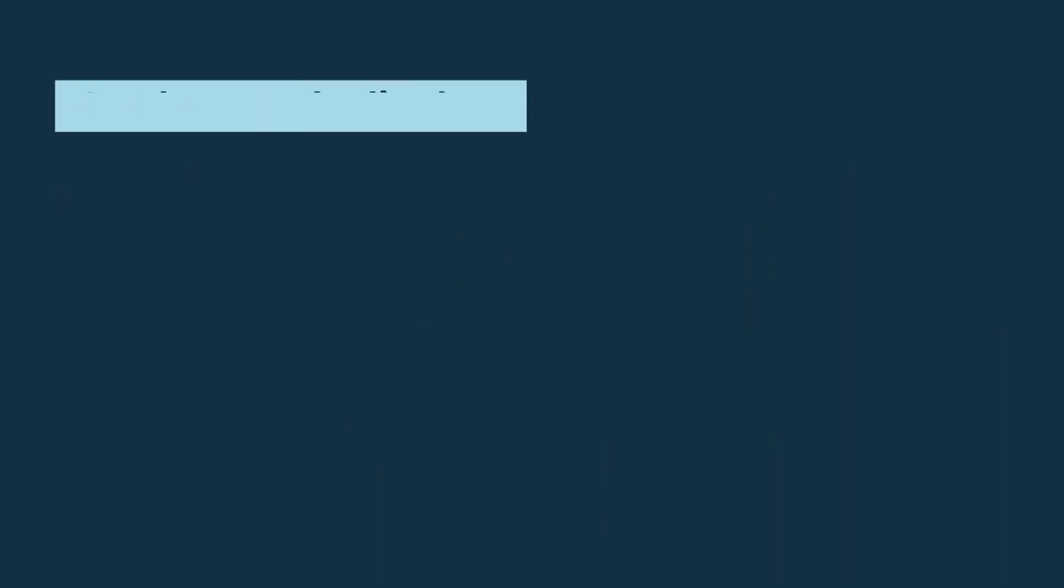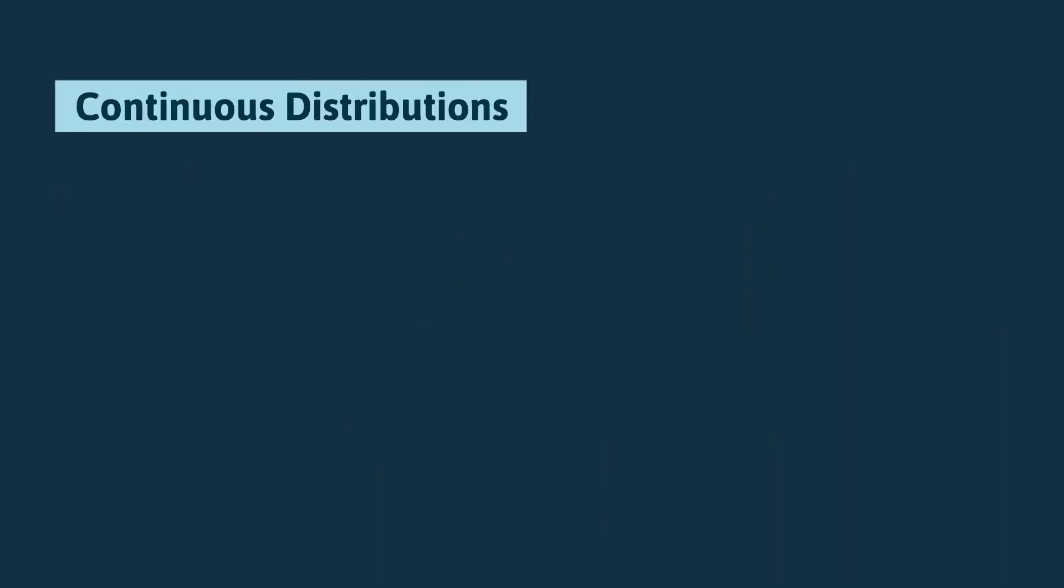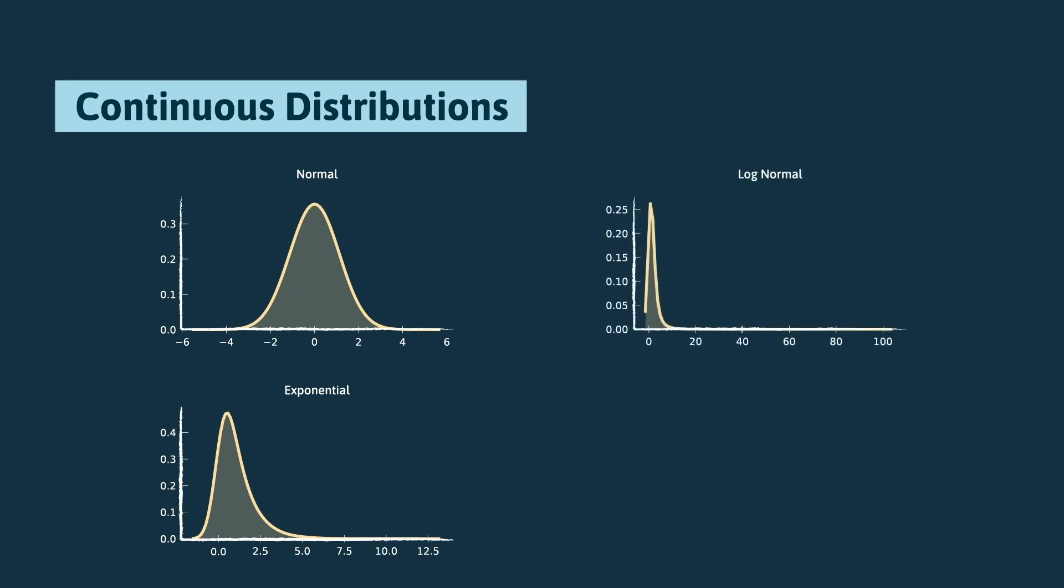For continuous variables, the normal or Gaussian distribution is our best friend in data science and is used whenever we don't know much about the data. The exponential is the distribution to use to describe events which occur continuously independently over time at a constant average rate. But also the log normal, or the chi-square, the distribution best suited for describing the sum of the squares of k independent standard normal random variables, and lots of other well-known and studied distributions.